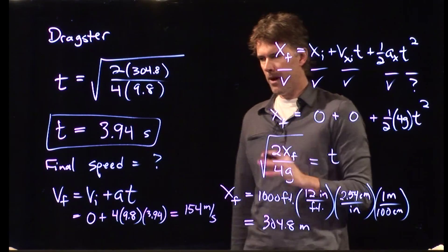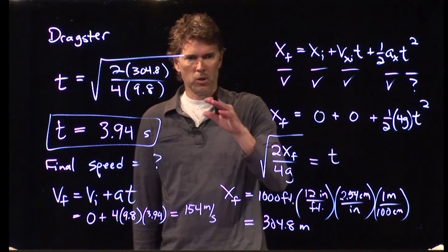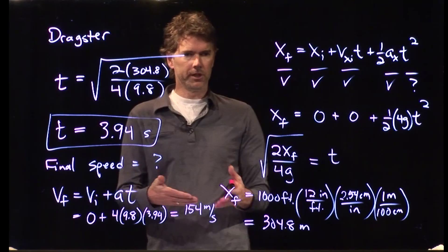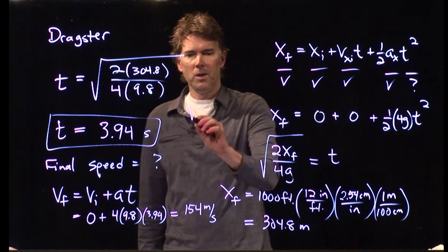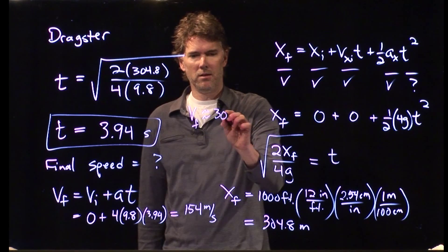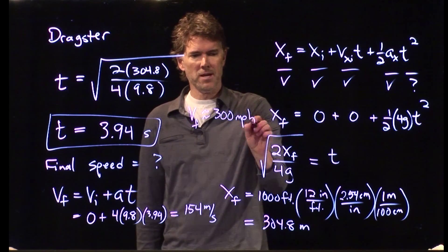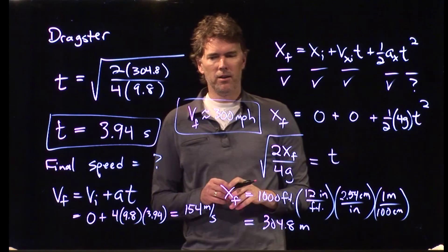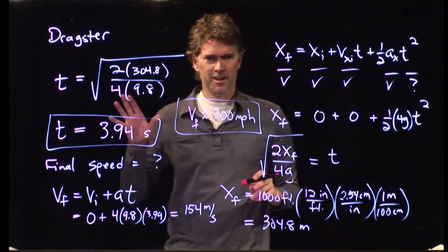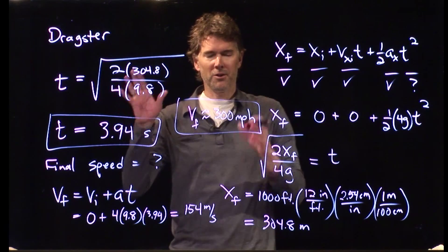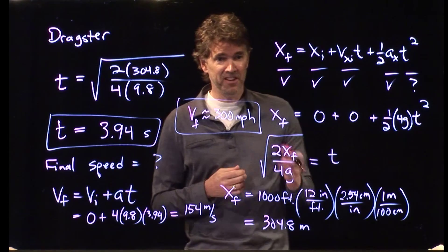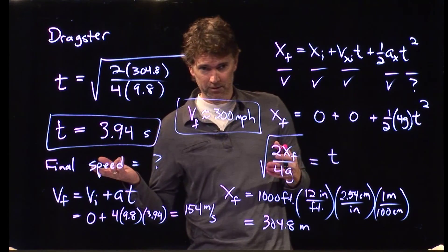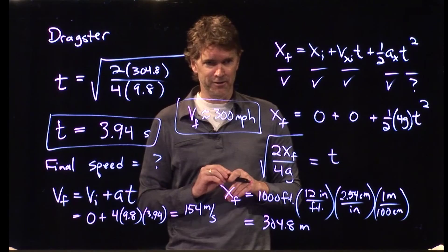And if we remember our rule for going from meters per second to miles per hour, it's roughly double. So double this number, and we end up with a final speed of around 300 miles per hour. And so now when you think about stuff like dragsters, let's keep in mind what we're talking about. Your car goes 0 to 60 in 5 seconds. A dragster in 4 seconds goes 0 to 300 miles per hour.